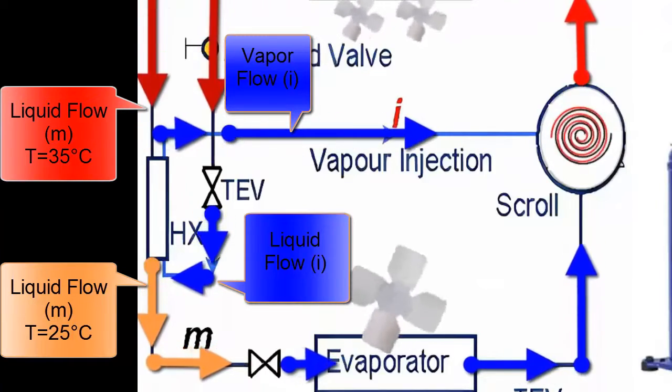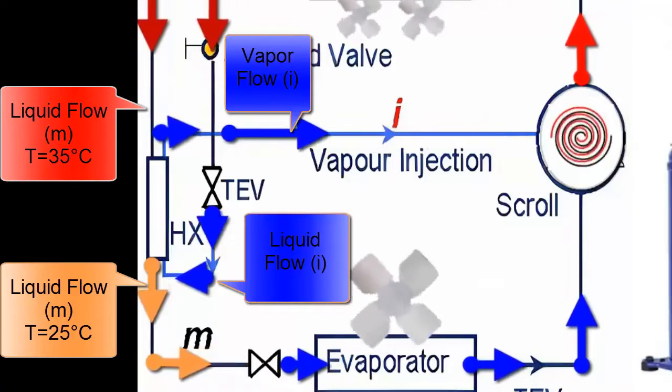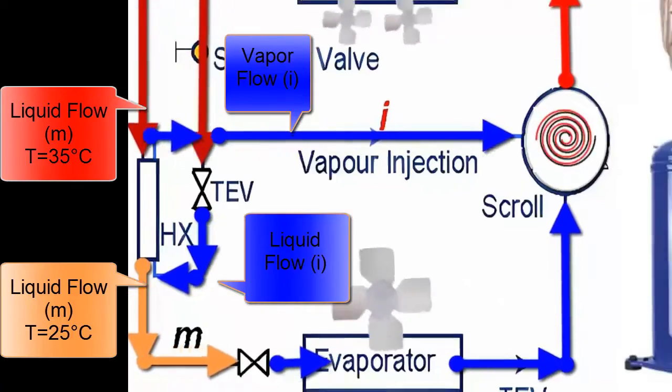Sub-cooling of flow M is performed to significantly increase the cooling capacity of the refrigeration system.